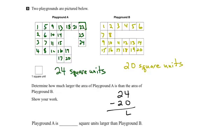Therefore, Playground A is 4 square units larger than Playground B.